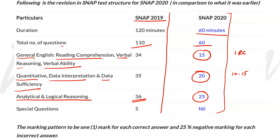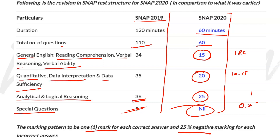Special questions have been completely removed — there are nil special questions now. Regarding the marking pattern: you get 1 mark for every correct answer and there is 25% negative marking, meaning 0.25 marks will be deducted for every wrong answer. Negative marking is still there. So it's +1 for every correct answer and -0.25 for every wrong answer.